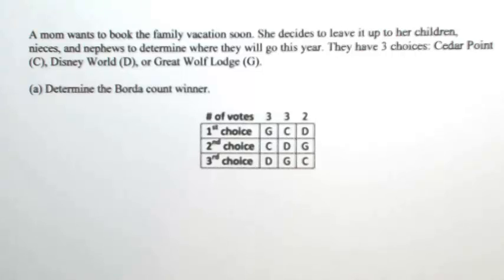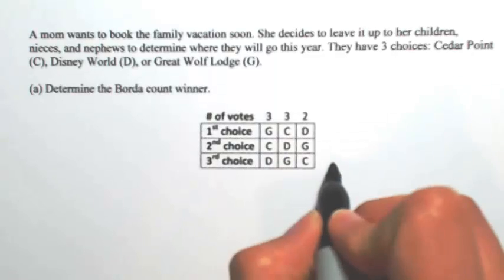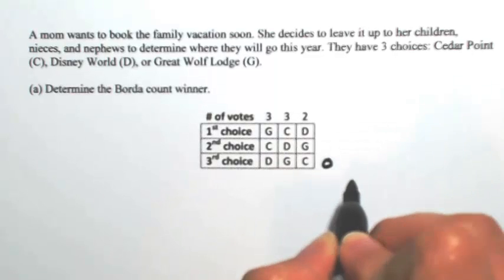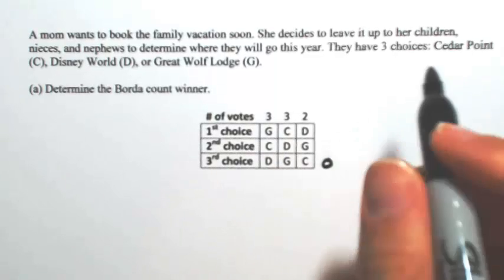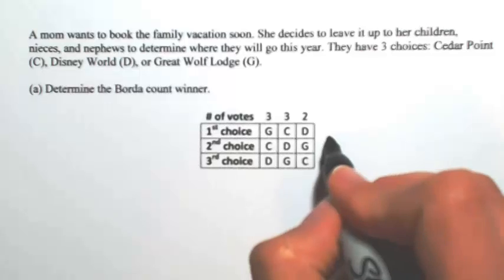Part A: determine the Borda count winner. In doing the Borda count, the first thing we do is assign zero points to the last choice, and for every step you move up, you're going to get one more point.